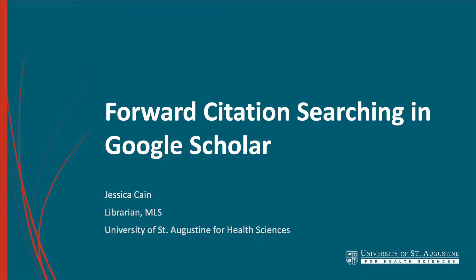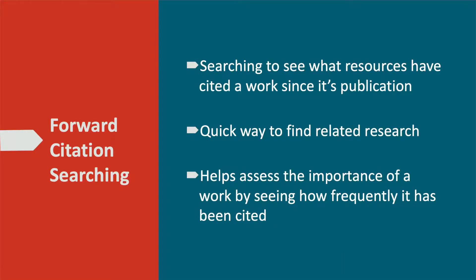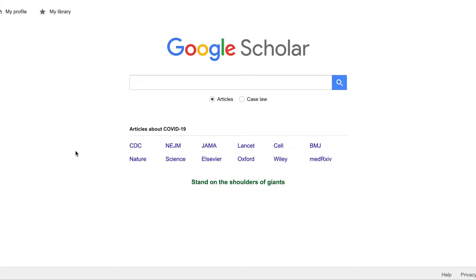Forward citation searching is when you search to see what resources have cited a work since its publication. This is not only a quick way to find related research, but also a way to help you assess the importance of a work by seeing how frequently it's been cited. This video will walk you through how to do this in Google Scholar.